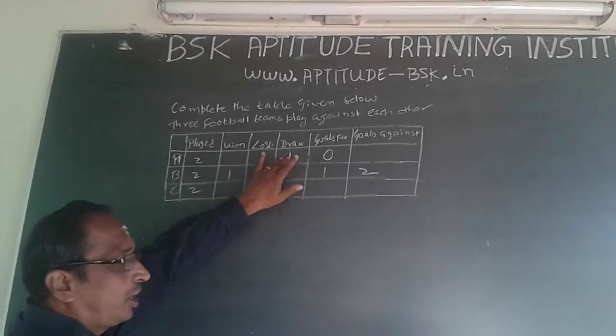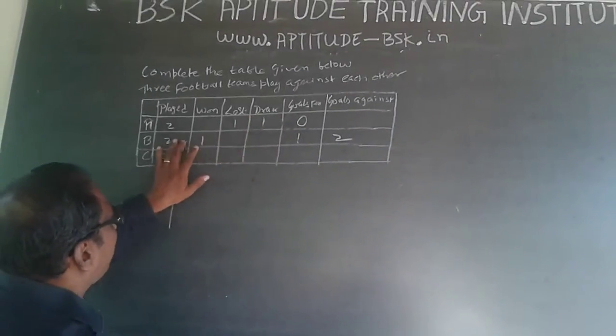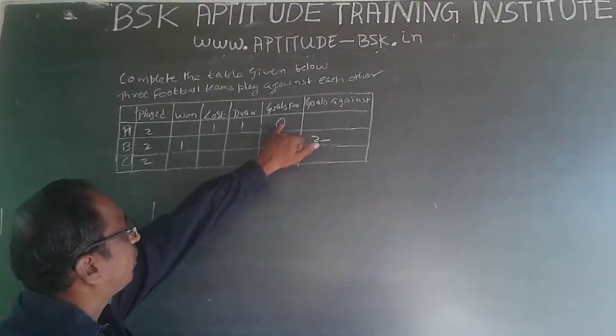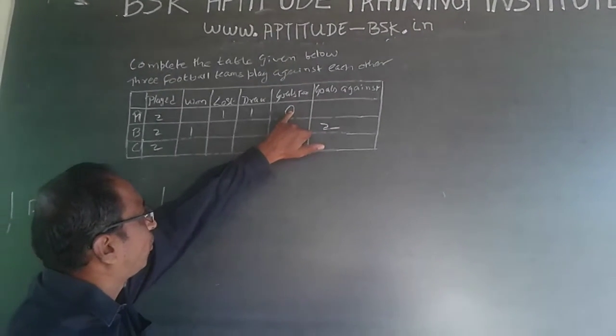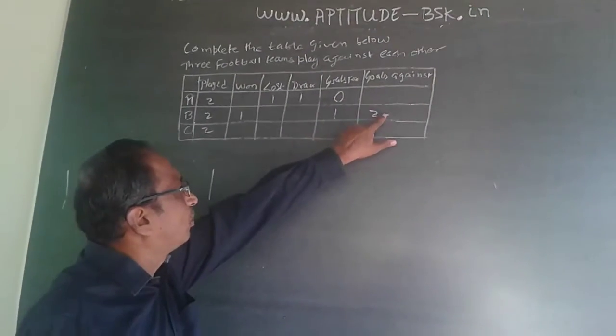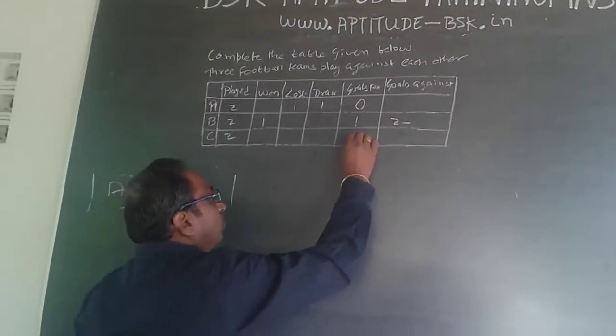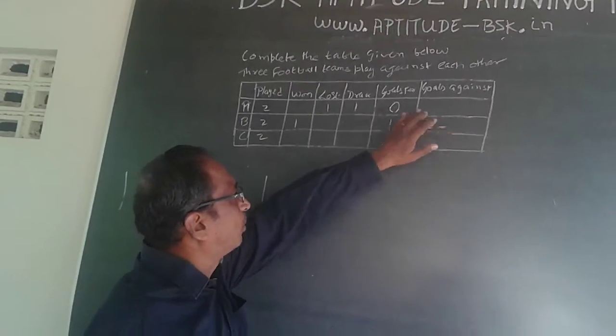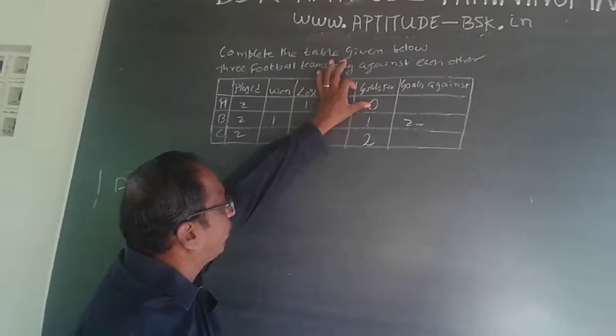I go to B. The goals against is given as 2. Because A has not scored any goal, both these goals should have been scored by C. So goals 'for' for C will be 2. Goals 'against' for B is 2 because A has not scored, so both goals were scored by C.